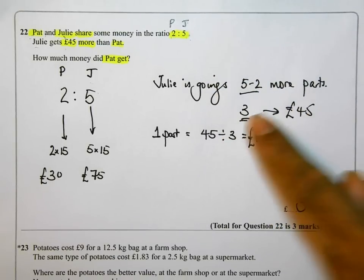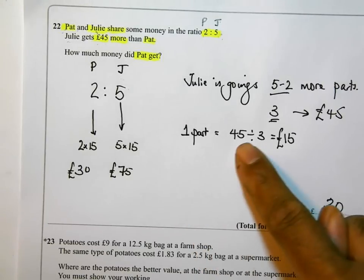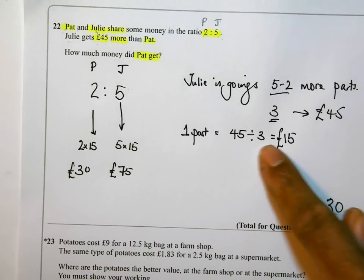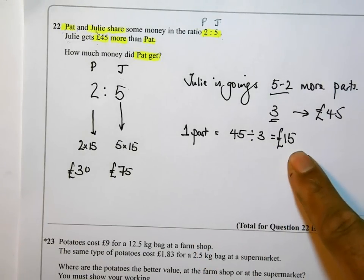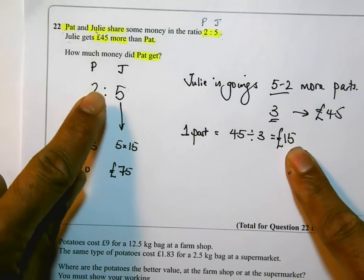Julie gets £45 more, and I used that to tell me that the 45 is 3 parts. Therefore, one part is 45 divided by 3, which equals 15. Once I know that, I can work out how much Pat needed because 2 lots of 15 gives me how much she got altogether.